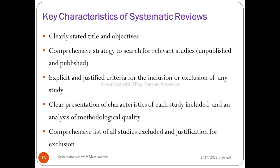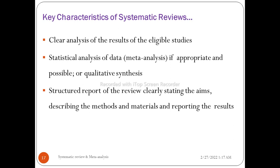Key characteristics of systematic review include: a clearly stated title and objective; a comprehensive strategy to search for literature, including both published and unpublished studies; explicit and justified criteria for inclusion and exclusion; clear presentation of characteristics of each included study; analysis of methodological quality; and a comprehensive list of excluded studies with justification for their exclusion.